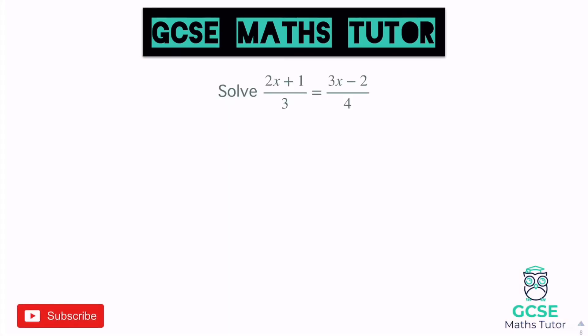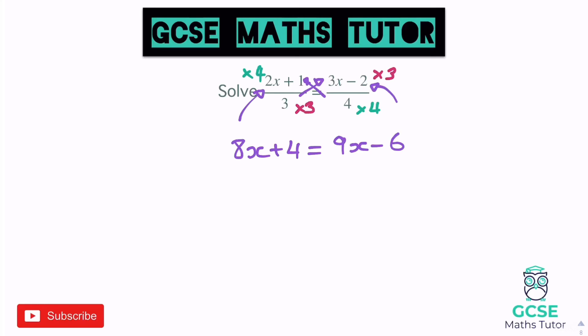This question has a fraction on both sides of the equal sign. You can actually do something called cross-multiplying here, because we're going to times both sides by 3, which is not going to change the top of the left fraction but will multiply the top of the right fraction by 3. And we also then need to times both sides by 4, which will change the top of the left one. So you can just cross-multiply: times the left top by 4 to get 8x plus 4, and times the right top by 3 to get 9x minus 6. From there it's quite easy to solve.